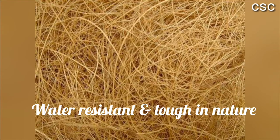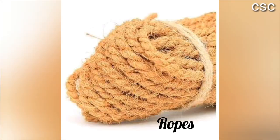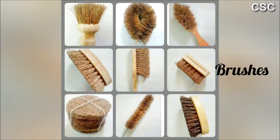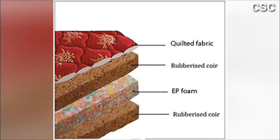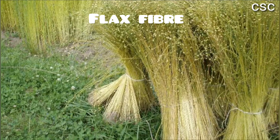Coir is used to make doormats, coir ropes, brushes, mattresses, and many other decorative materials. Next is flax fiber, also known as linen.